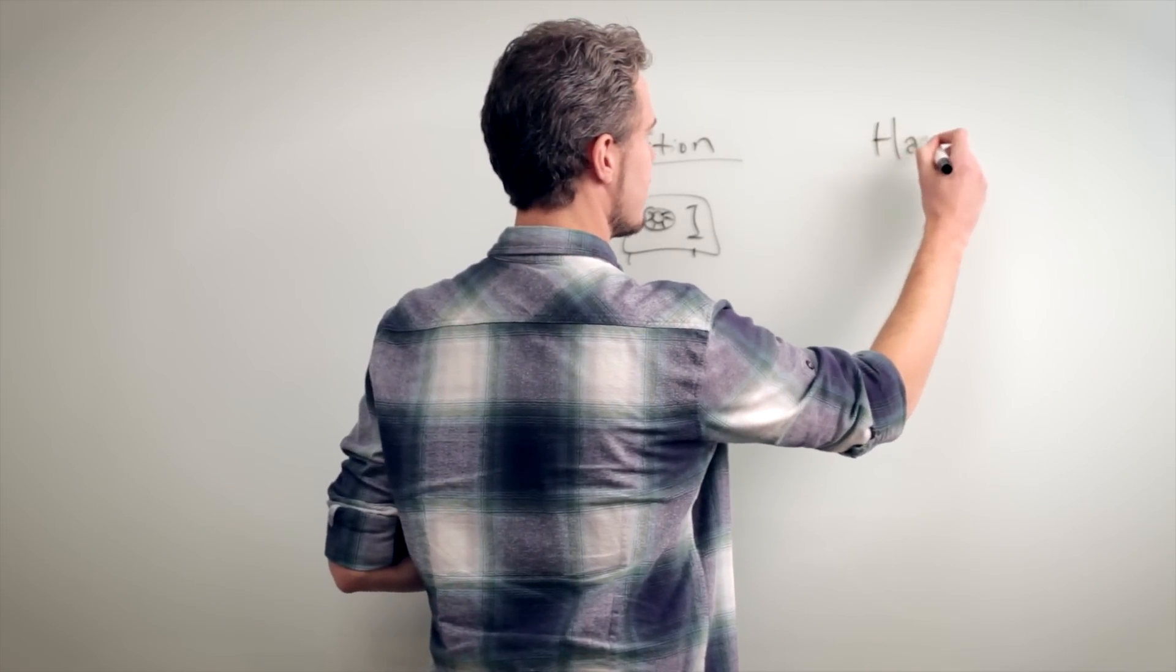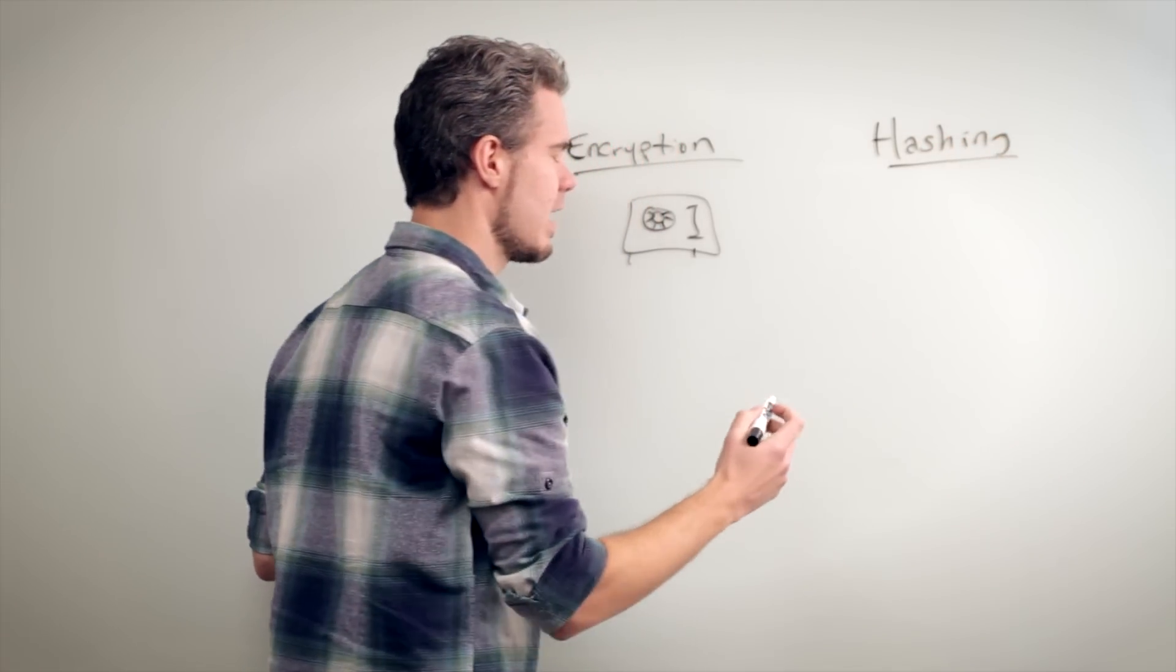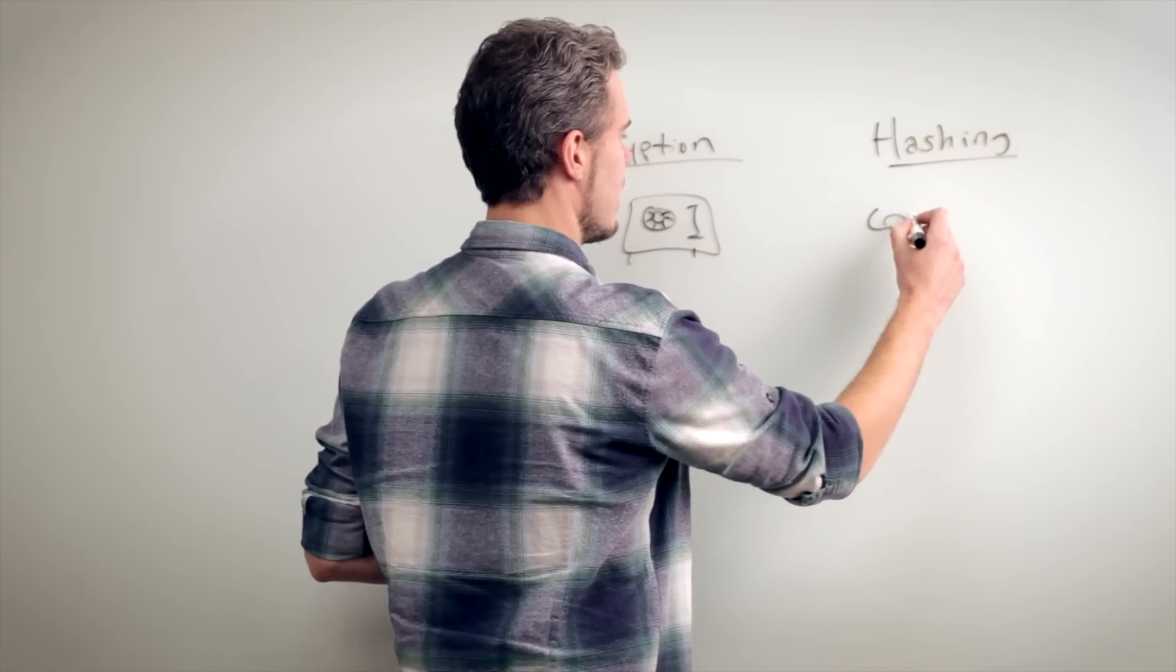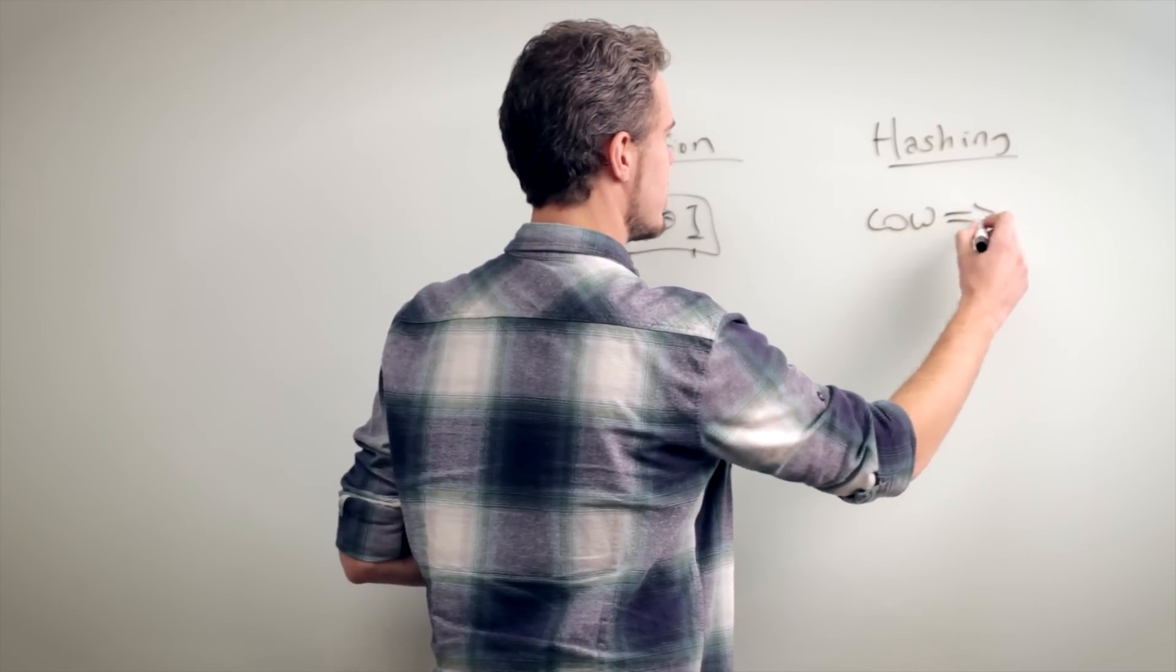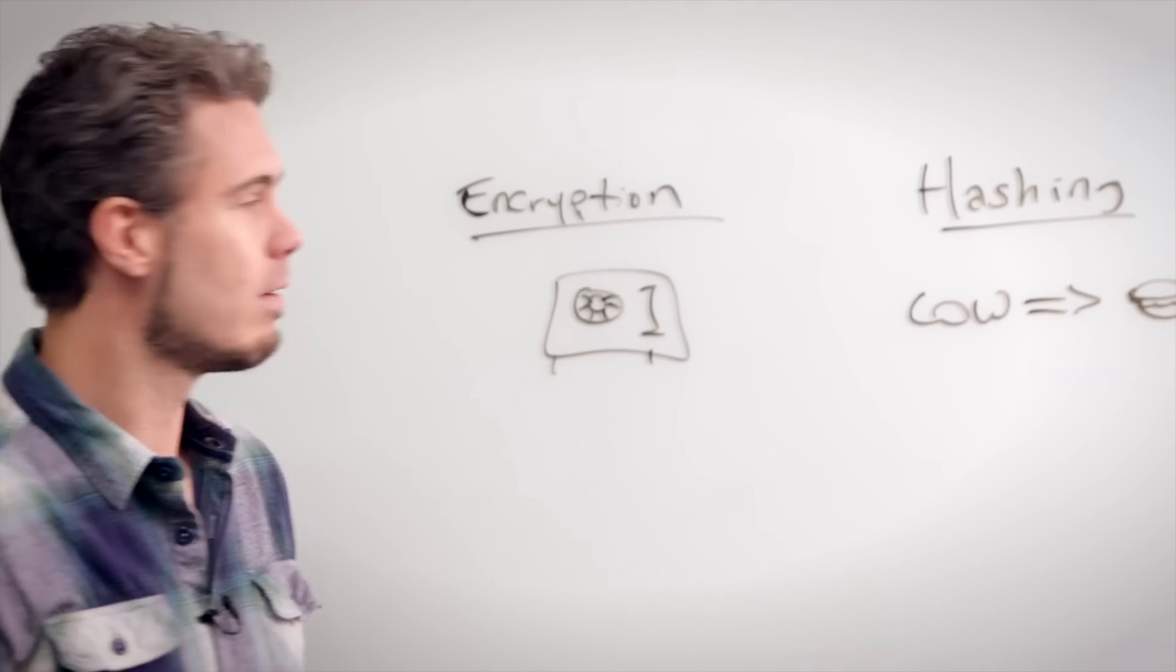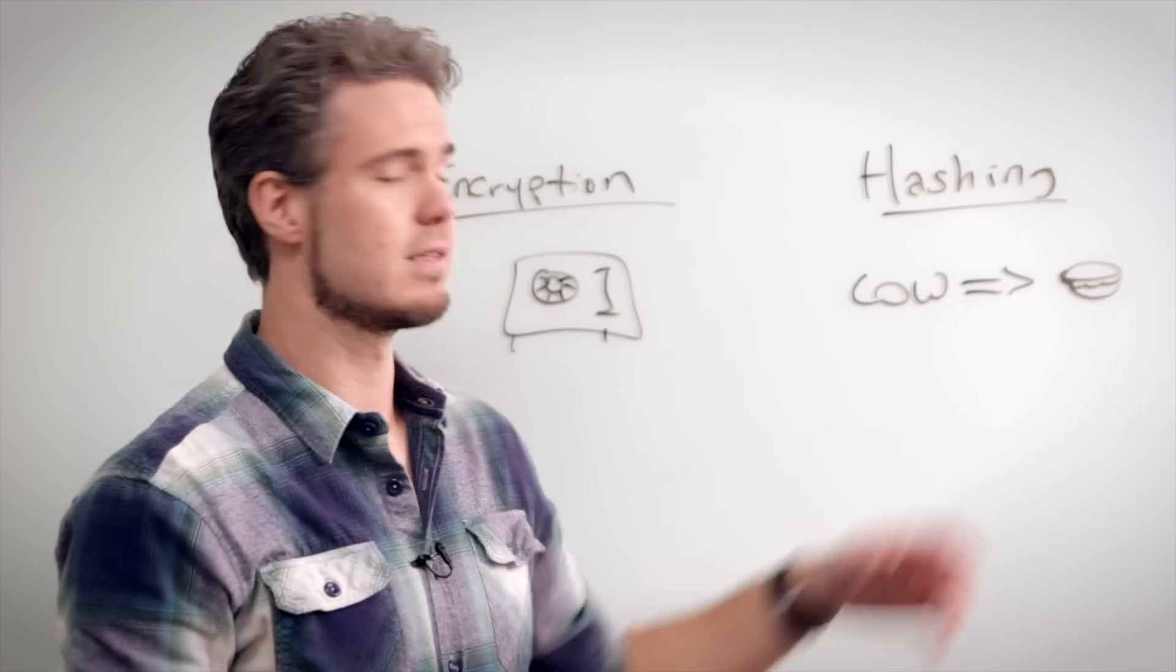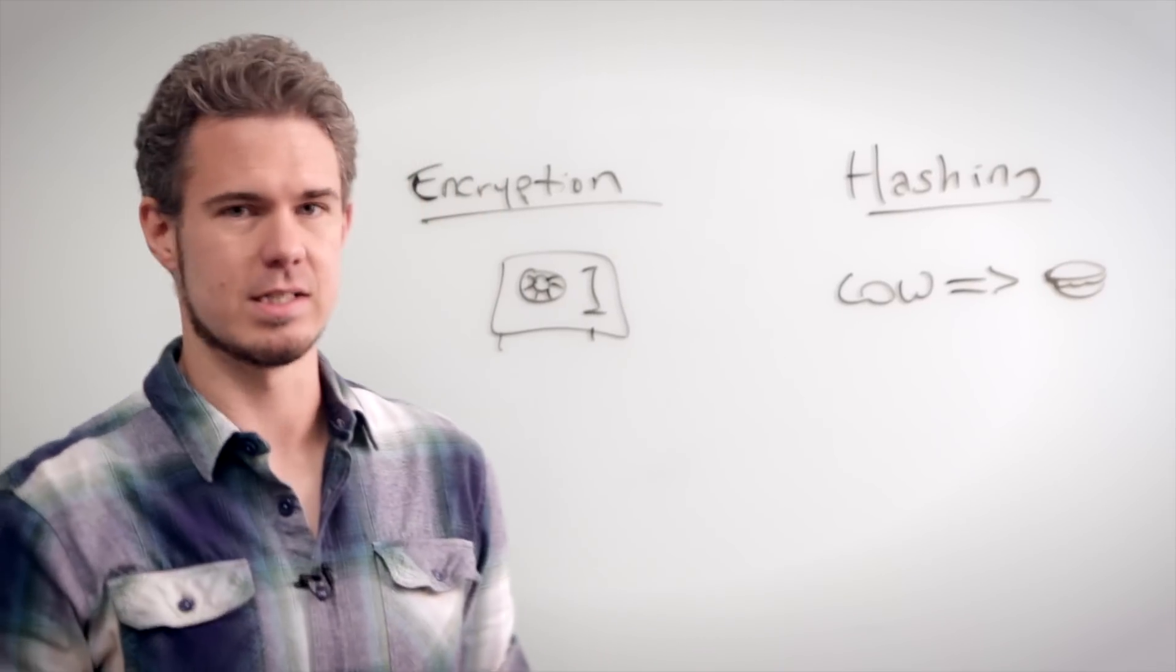So hashing is a little bit different in that it is what we call a one-way function. The analogy I've heard that I kind of like: it's like if you put a cow through a machine and you get a hamburger, right? You cannot put that hamburger back into that cow. And if you had a perfect machine, every time you put the same cow through you would get the same hamburger. So that's kind of what hashing is like.